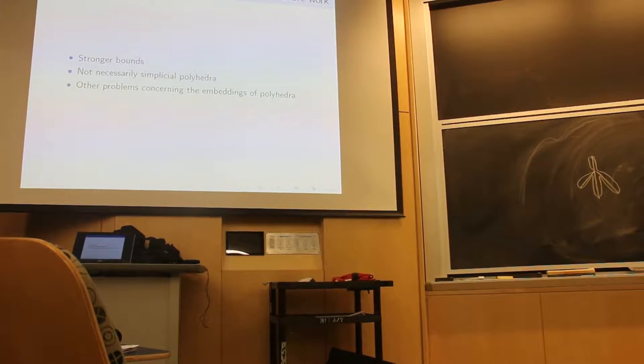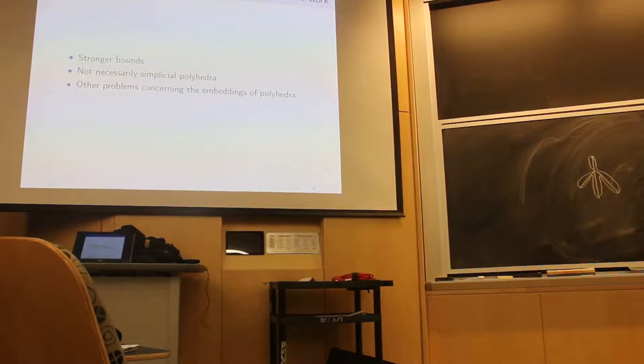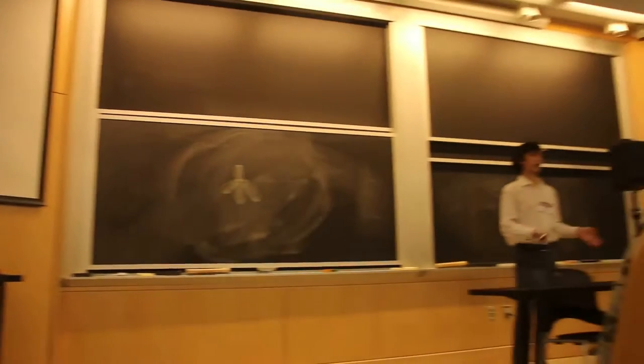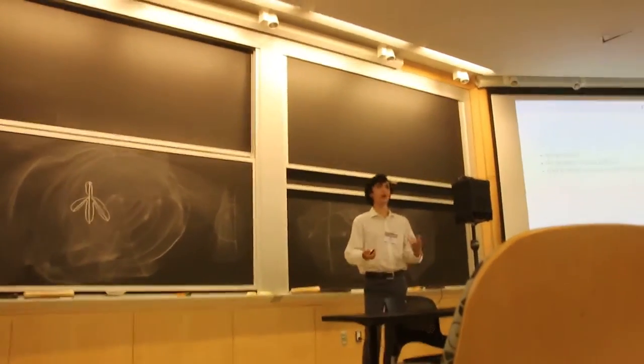We hope future works will generate stronger bounds in both directions on the number of inscribable simplicial polyhedra. In particular, we conjecture that there is not a positive proportion of simplicial polyhedra which are inscribable. Or in other words, that the fraction of simplicial polyhedra which are inscribable will tend to zero as the number of vertices gets larger. We also hope to extend these computational techniques to measuring the number of not necessarily simplicial polyhedra of any sort which are inscribable.